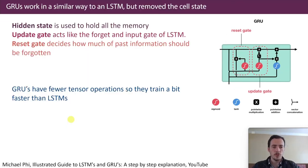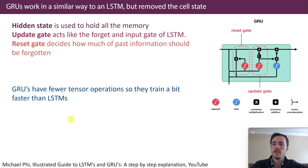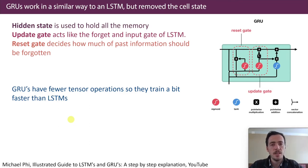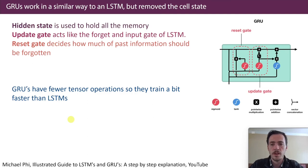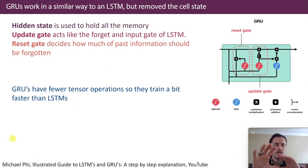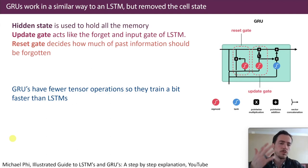Gated recurrent units work in almost the same way as LSTMs, but this time we've removed the cell state. They only have a hidden state to hold all memory. You have an update gate which acts like the forget and input gate of an LSTM, and a reset gate which decides how much past information should be forgotten versus retained. One advantage of GRUs is that they have fewer tensor operations, so they are a little bit faster, but they tend to be slightly worse performers — if something works better, it's typically a little bit slower.